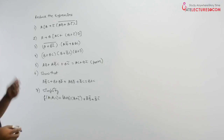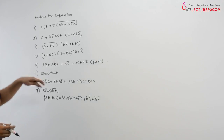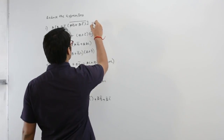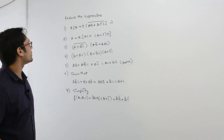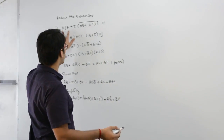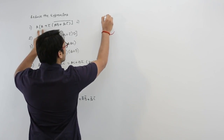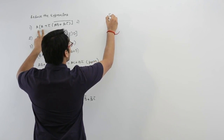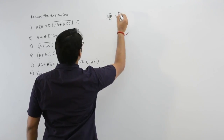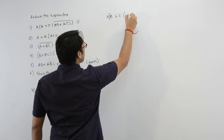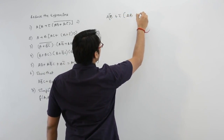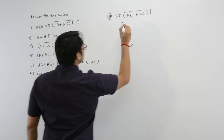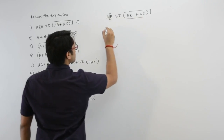Let us take the first expression. Note the question before solving it. It says reduce this expression. We can write this expression as a(b + c)' — that is, a·b plus a·c complement, whole complement.